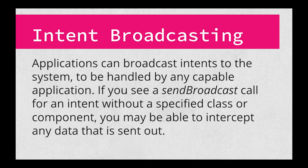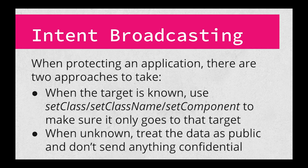The ability to broadcast intents — sending them out to be handled by any capable application — is very useful. For instance, it allows the system to make interested applications aware of changes in network state or a phone going into or coming out of airplane mode. However, unless the receiver is specified, any application on the system could intercept such a broadcast. If you're using it to communicate between apps you control or different parts of an application, you may not want everyone to be able to receive it. If you see a sendBroadcast call for an intent that hasn't had its class or component specified, this is something that can be intercepted by a malicious app. To fix this: if you know where the broadcast needs to go, you can explicitly set the target using setClass, setClassName, or setComponent methods on the intent. If you don't know where it's going, be very careful about what data is sent across — think of it as writing your data on a flyer posted on a storefront where anyone can read it.